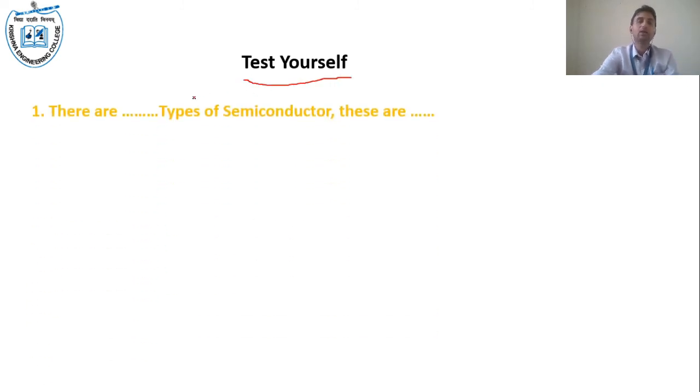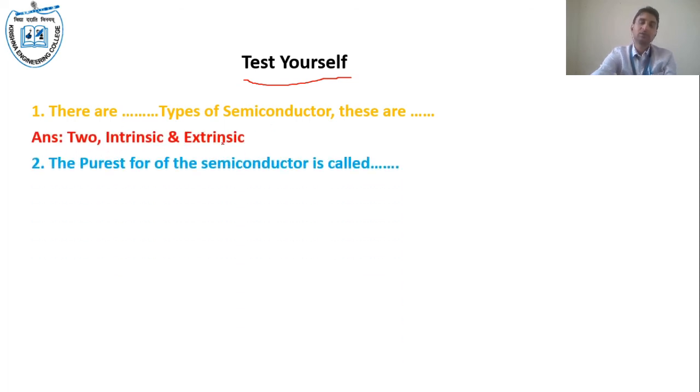Test yourself: There are how many types of semiconductor? Answer: Two, intrinsic and extrinsic. The purest form of the semiconductor is called intrinsic semiconductor.